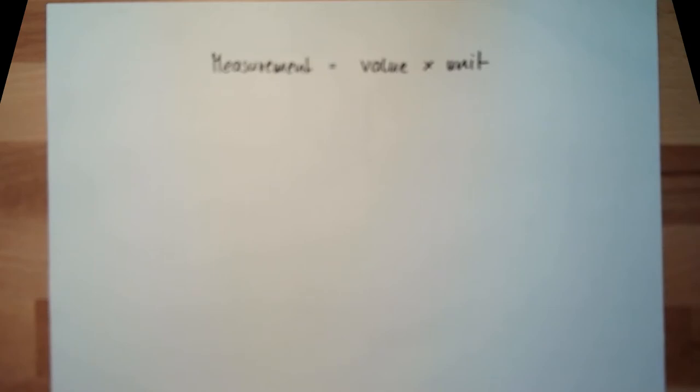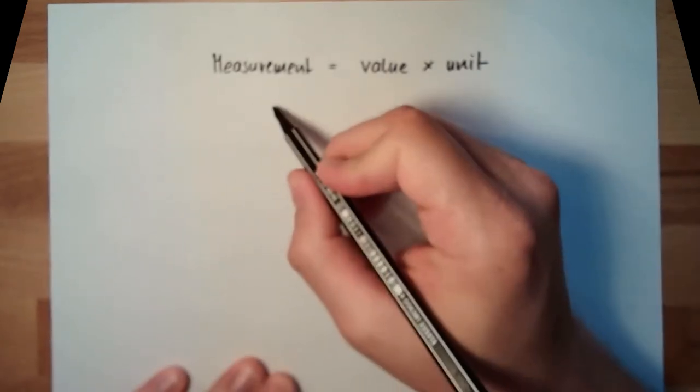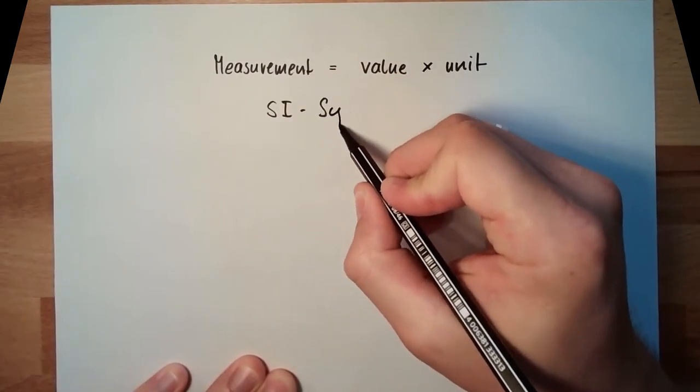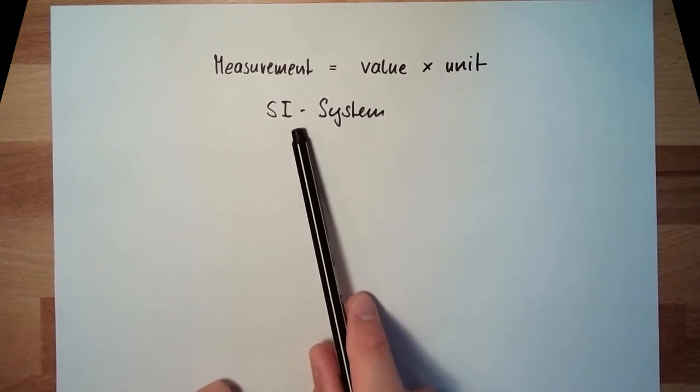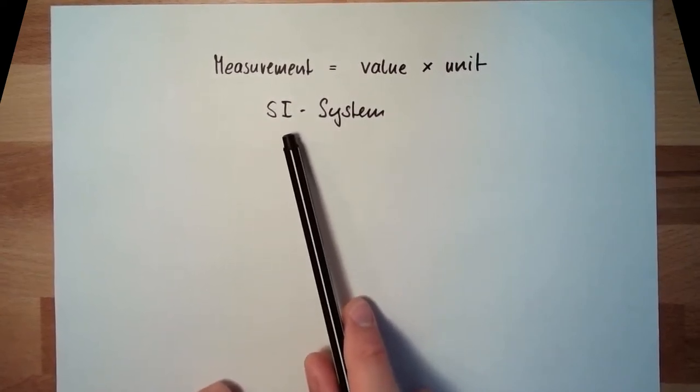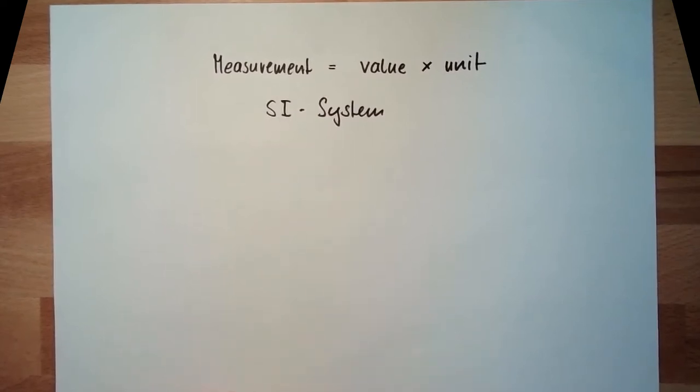But back in time, the international community standardized data units, and this is the so-called SI system. Standardized unit system. Système Internationale du Unité. I'm sorry, I cannot speak French, but it is French, an abbreviation of the French word. The SI system is the base of our measurement values.